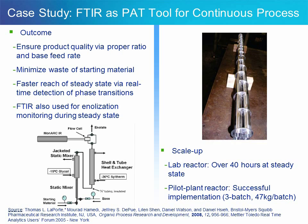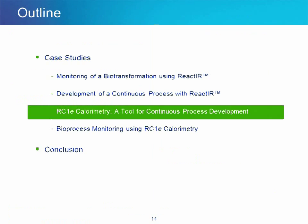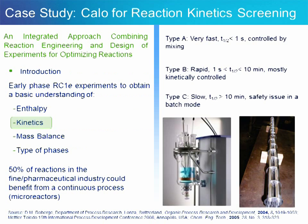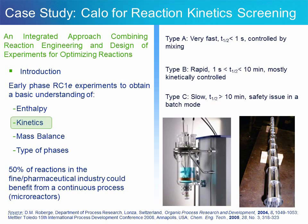Having shown two examples on the use of mid-infrared in-situ reaction analysis, let's now talk about reaction monitoring using RC1 calorimetry. In this case, I'm going to refer to at least three papers: one published in Organic Process Research and Development in 2004, one in Chemical Engineering Technology in 2005, and a presentation given by Dominic Robergé at the Mettler-Toledo Process Development Conference in 2008. RC1 calorimetry is one of the critical tools for assessing a process to be developed in a continuous mode, allowing a quick yet accurate assessment of reaction kinetics in addition to enthalpy determination.